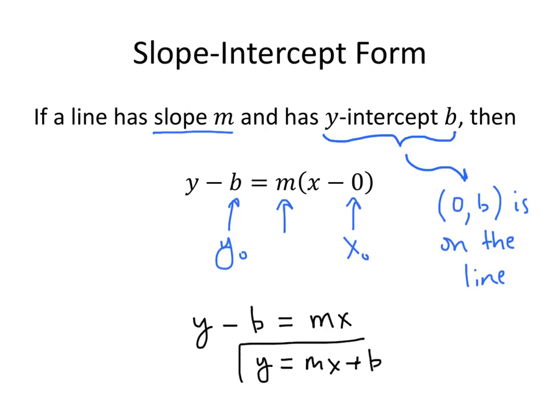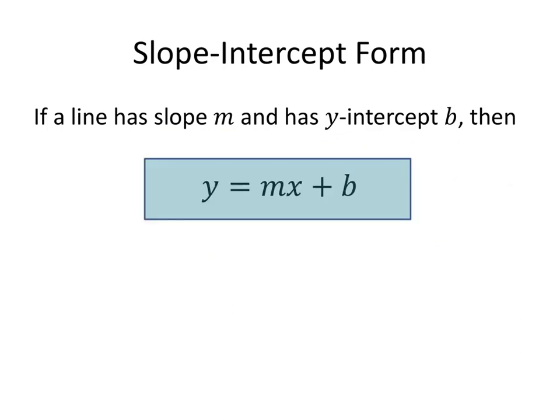And that might look familiar to you. That's our slope-intercept form. So the slope-intercept form for a line is y equals mx plus b. And this is the form that we want to use when the information that we're given is the slope and the y-intercept of a line. And very often we'll be asked to transform equations of lines into this format because it's very easy to read off the slope and the y-intercept, which is useful information in some applications.